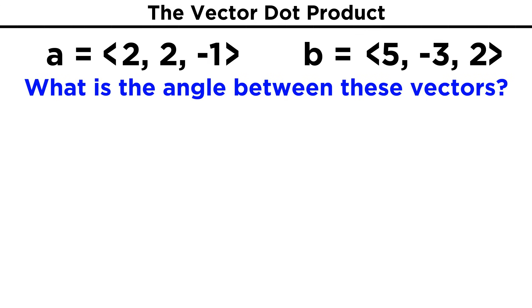Well first, let's find the length of each vector. For A, that's two squared, plus two squared, plus negative one squared, all under a square root. We simplify to get nine, and then take the square root to get three.